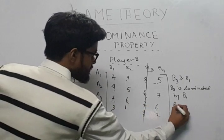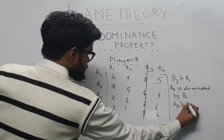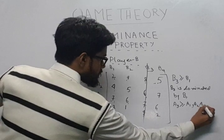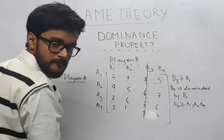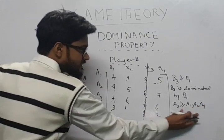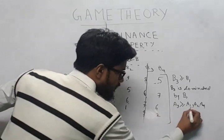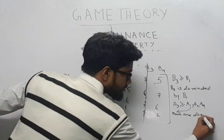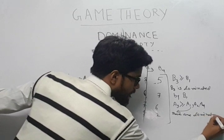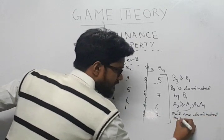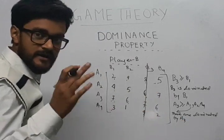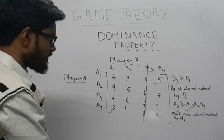So when A3 is greater than or equal to A1, A2, and A4, we say these are dominated by A3. So we say all these are dominated by A3.